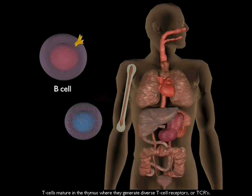T cells mature in the thymus where they generate diverse T cell receptors or TCRs.